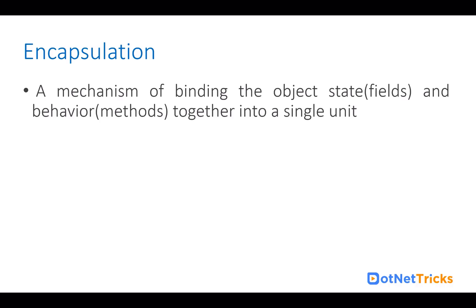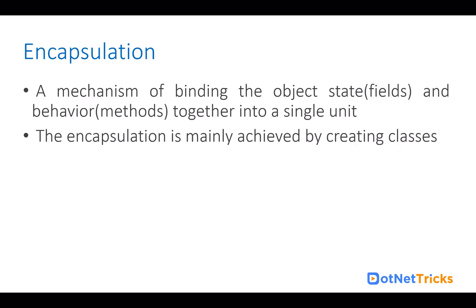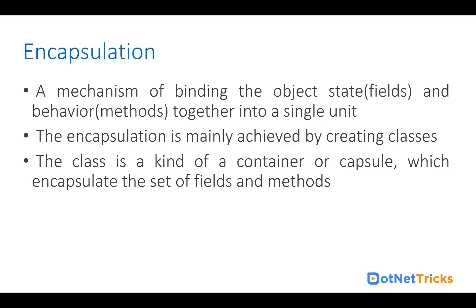The next is encapsulation. Encapsulation is a mechanism of binding the object state — you can say fields — and behavior like methods together into a single unit. Encapsulation is mainly achieved by creating classes. With classes, we can achieve encapsulation. A class is a kind of container or capsule which encapsulates a set of fields and methods. When you are creating a class in any language like C# or Java, we are achieving encapsulation, because a class contains fields and methods.